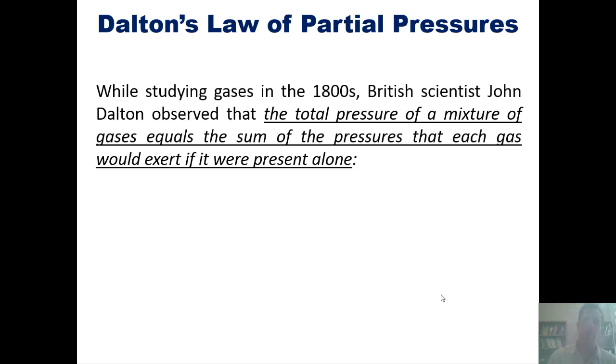That's summarized by using this mathematical equation. Total pressure of all these gases in one container equals the individual pressure of gas 1 added together with the individual pressure of gas 2, 3, 4, 5, etc., for however many gases you have in the chamber. This is known as Dalton's Law of Partial Pressures.